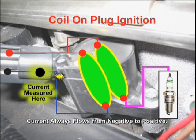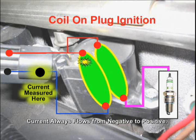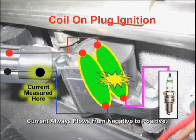Current, on the other hand, is measured either with a clamp-on amp probe, or by breaking the wire and connecting an amp probe in series.